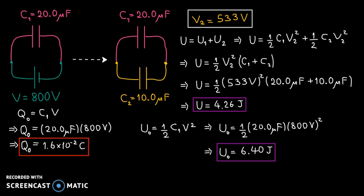Why is there a decrease in potential energy? When the first capacitor was disconnected and reconnected to the second capacitor, the charge was redistributed. The electric charges moved, and the system lost potential energy due to the motion of those charges. That energy was lost as thermal energy.